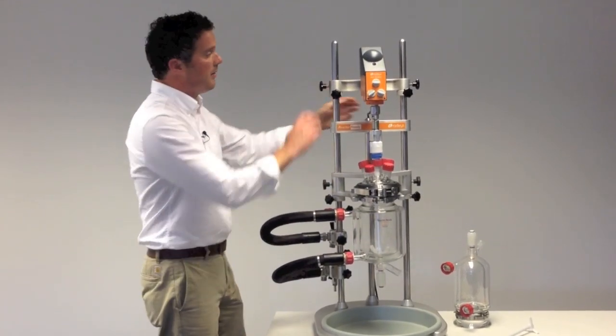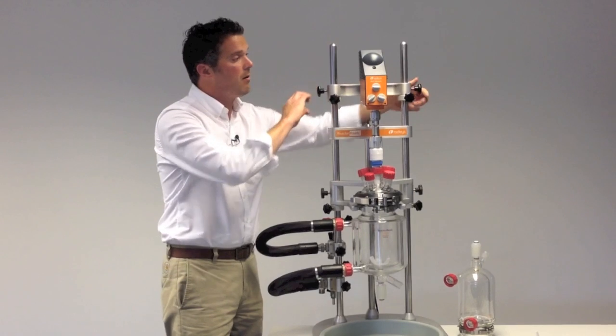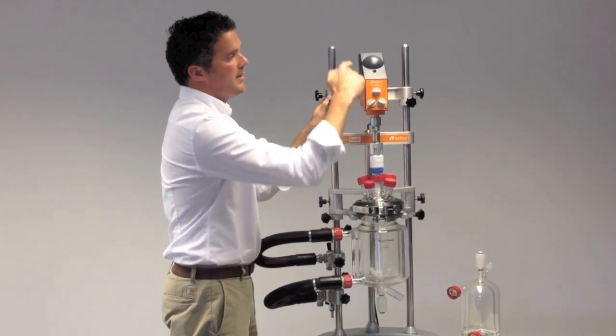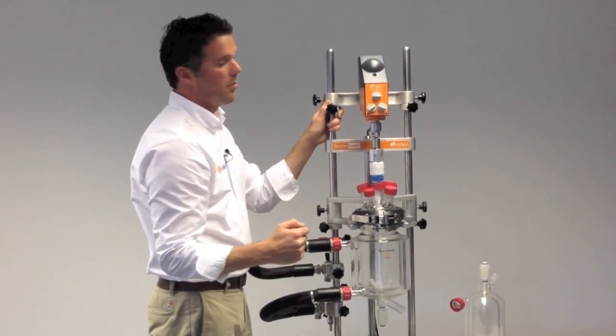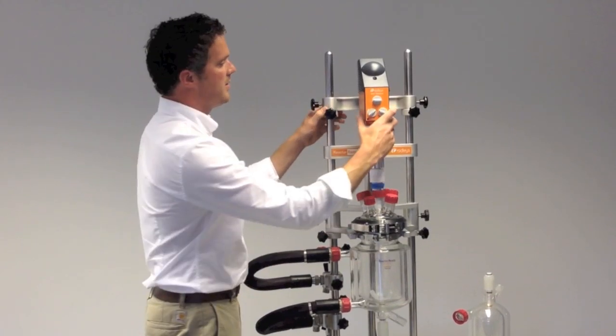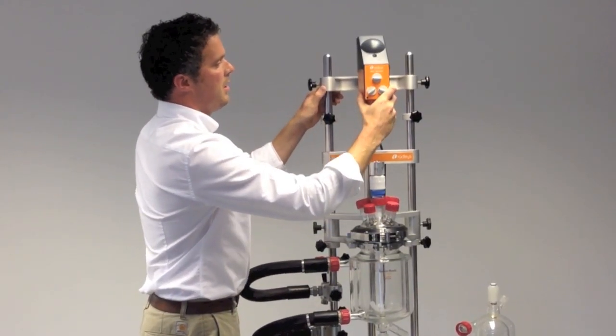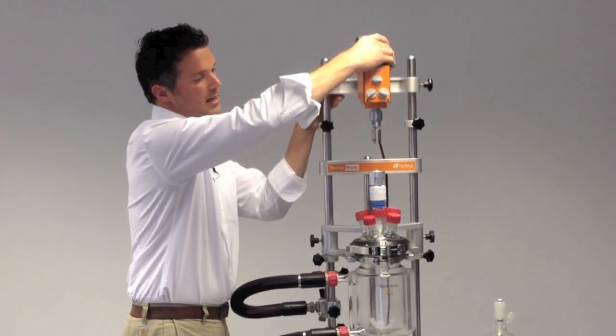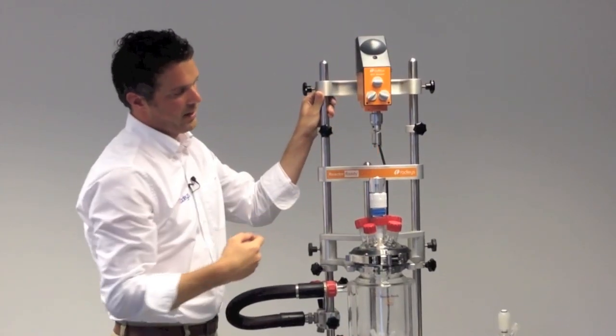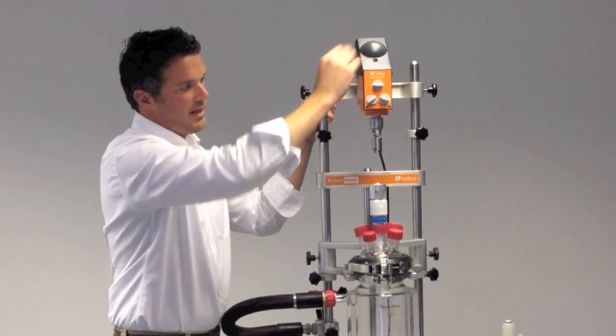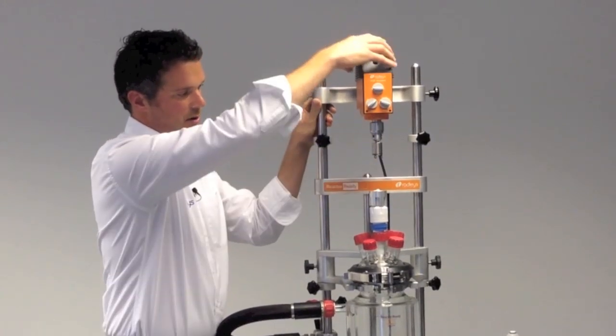At the top of the framework is the I-beam supporting the overhead stirrer. This is Radley's overhead stirrer but they'll accept most major overhead stirrers. Once you've undone the sides this just slides up and you can see here is the three pin drop-in coupling. You don't need any tools. This is what connects it to the stirrer shaft.